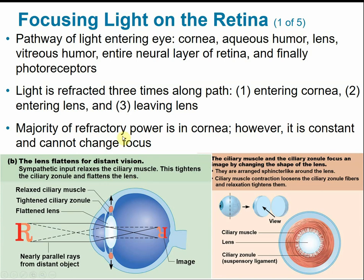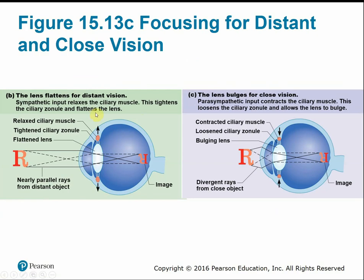The majority of our refractory power is in the cornea, but it's constant and can't change. We can change the shape of the lens to adjust for different types of vision. For distant vision, the ciliary muscle tightens and pulls on the suspensory ligaments to flatten the lens, giving more convergence on the focal point.